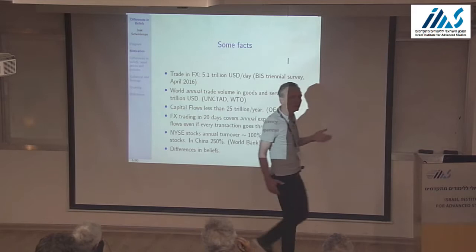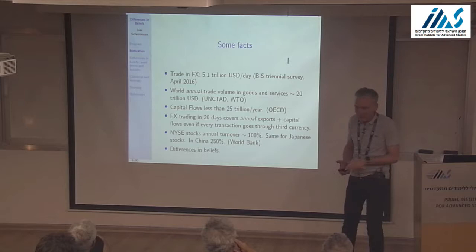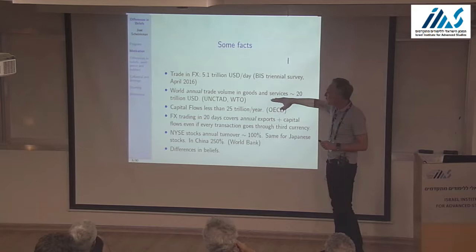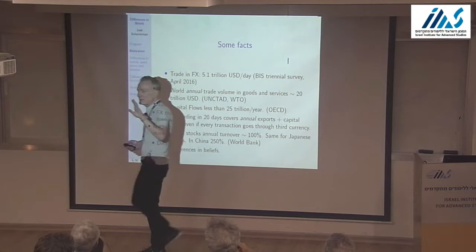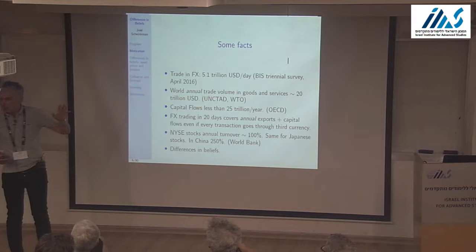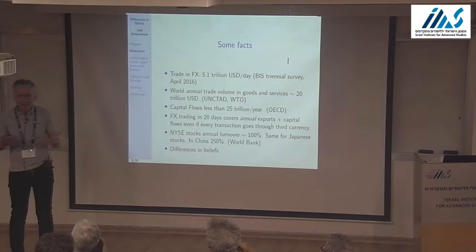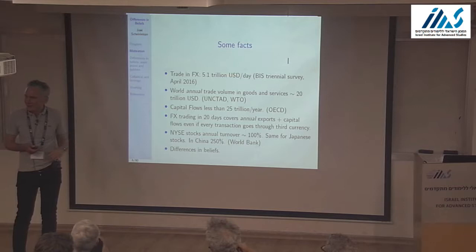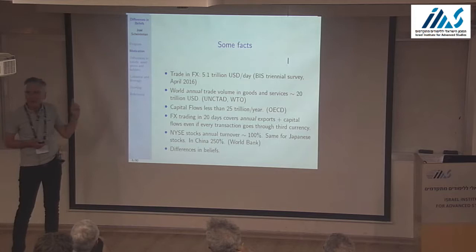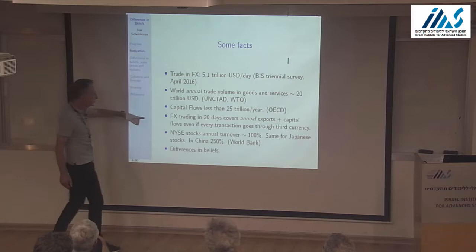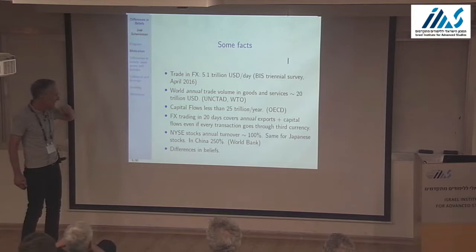World annual trade of goods and services is about 20 trillion USD per year. You can get that by knowing US GDP, multiplying by roughly four, knowing that the typical economy's trade share is 25–30%. Capital flows are less than 25 trillion per year. Adding that up, trading for just 20 days covers annual exports plus annual capital flows, even if every transaction goes through a third currency.